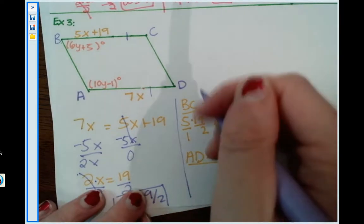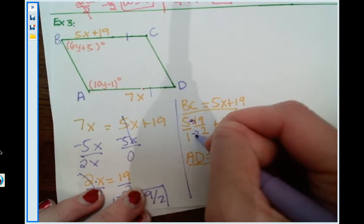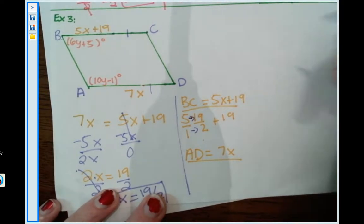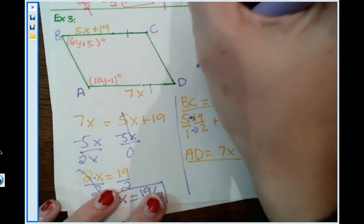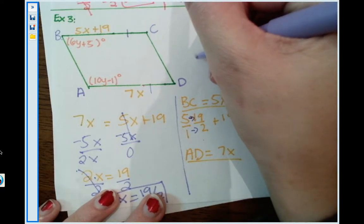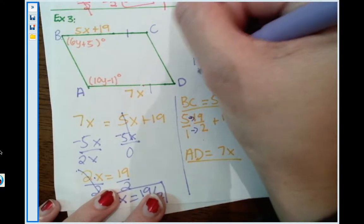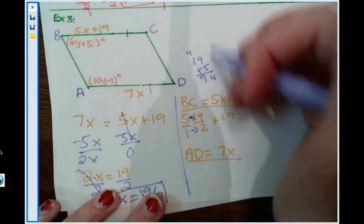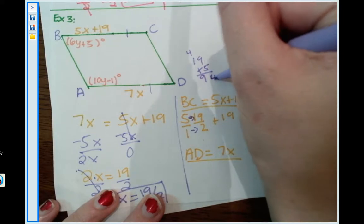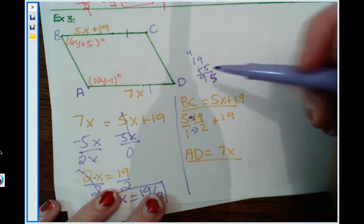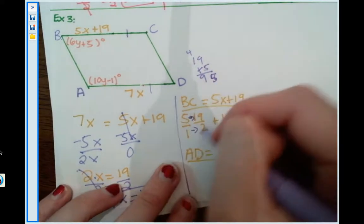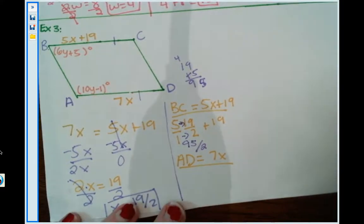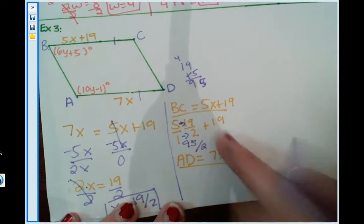And when we multiply fractions, we go straight on across. So 5 times 19, I'm going to do that on the side because I don't know that off the top of my head. So 19 times 5 is 95. So this is 95 in the numerator. And then 2 times 1 is 2. So it's 95 over 2 plus 19.